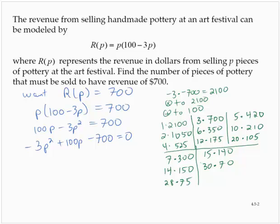30 and 70 have a sum of 100, so that's the pair that I need. So I'd have negative 3p squared plus 30p plus 70p minus 700.